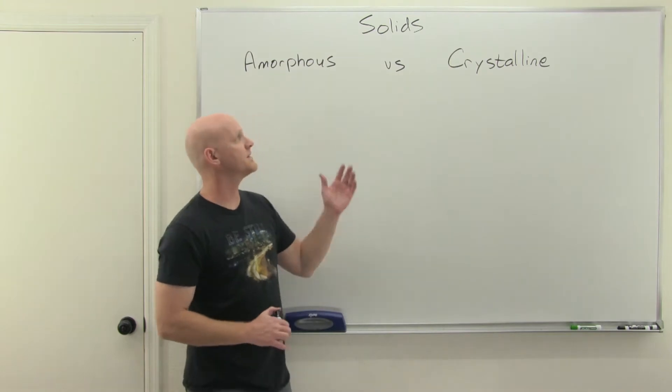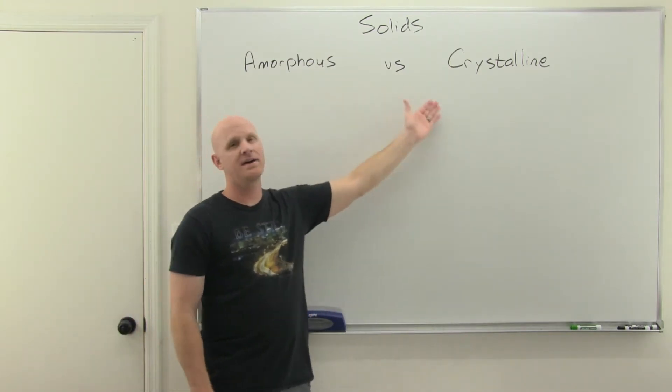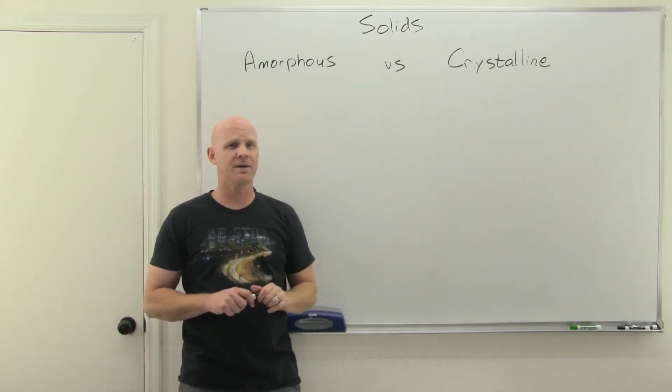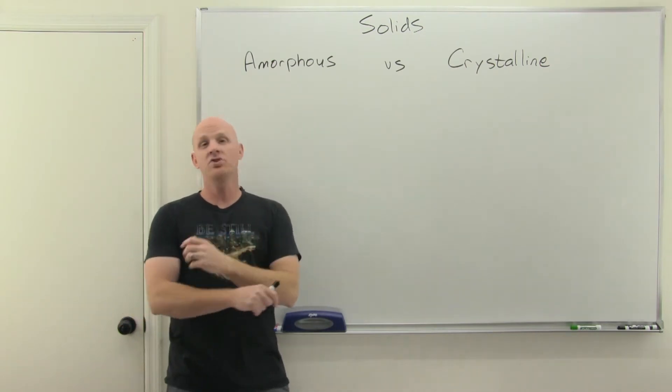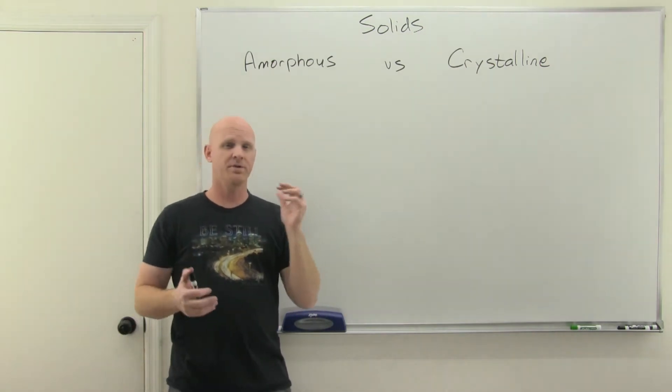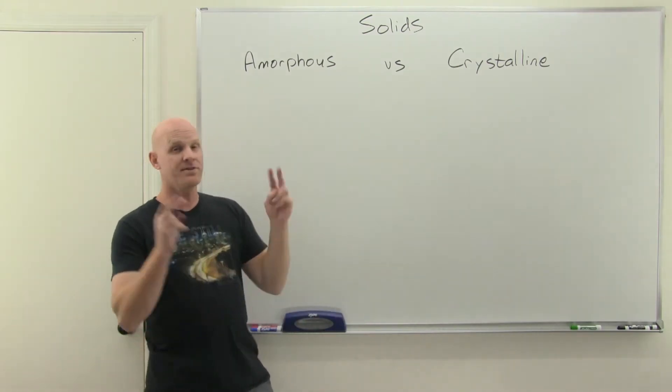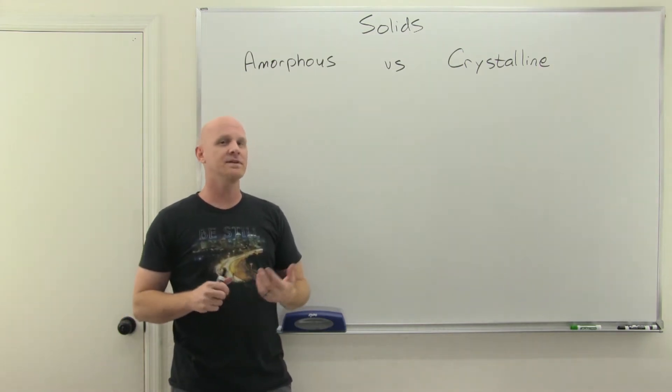To start our discussion of solids, we're going to talk about the two major categories of solid structures: amorphous and crystalline. An amorphous structure is something like glass, the most notable example. If you look at glass at the molecular atomic level, you'll find it has no ordered structure whatsoever. The placement of all the different atoms is just random. Glass is the most notable example, but it's also present in certain plastics.